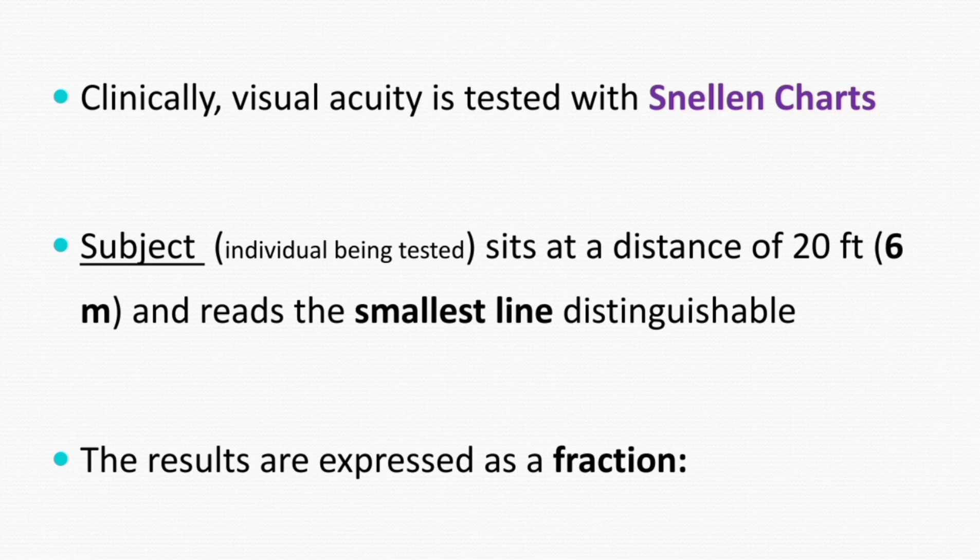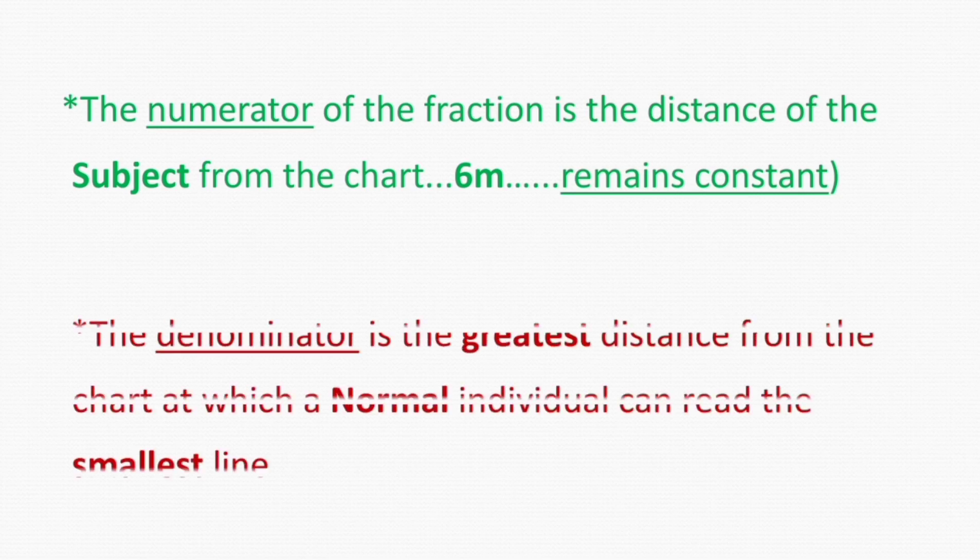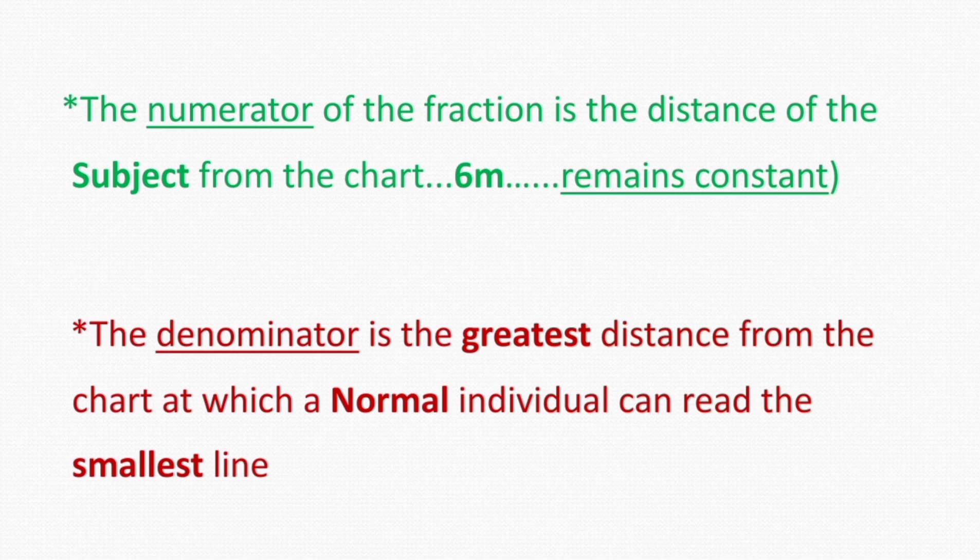And then the results are usually expressed in the form of a fraction: visual acuity equals subject over normal. Here the numerator of the fraction is the distance of the subject from the chart, which remains fixed at about 6 meters or 20 feet. And the denominator is the distance of the normal person from the Snellen chart. It is the greatest distance from the chart at which a normal person can read the smallest line.